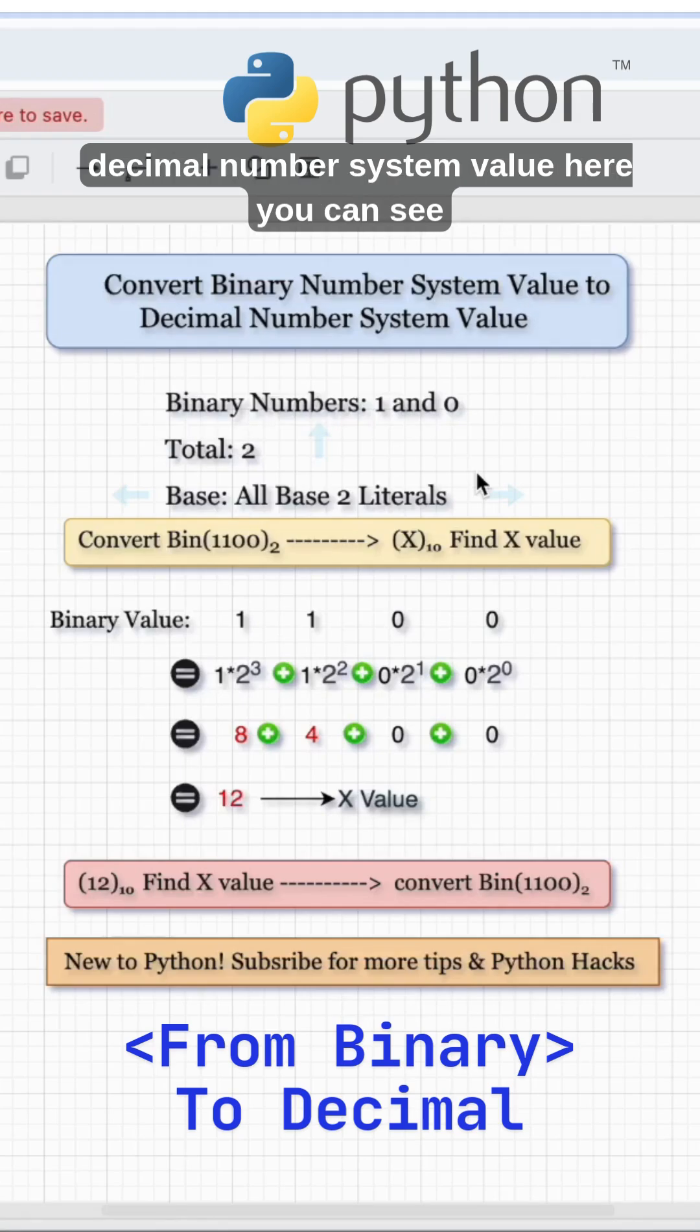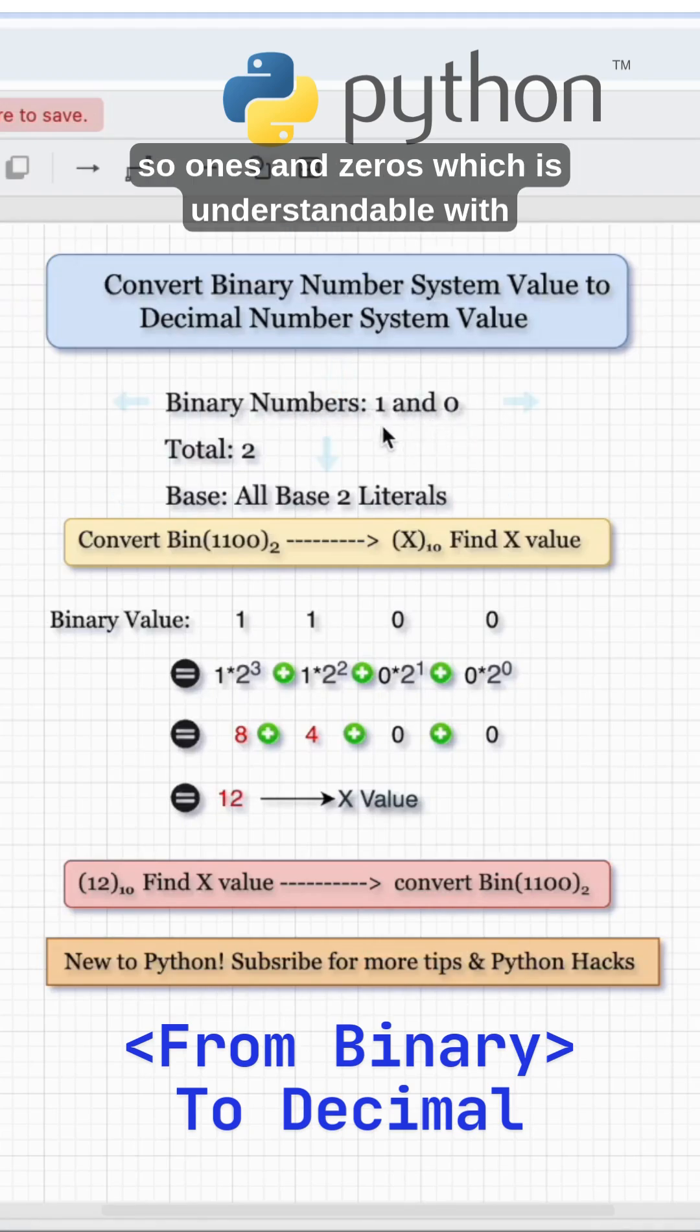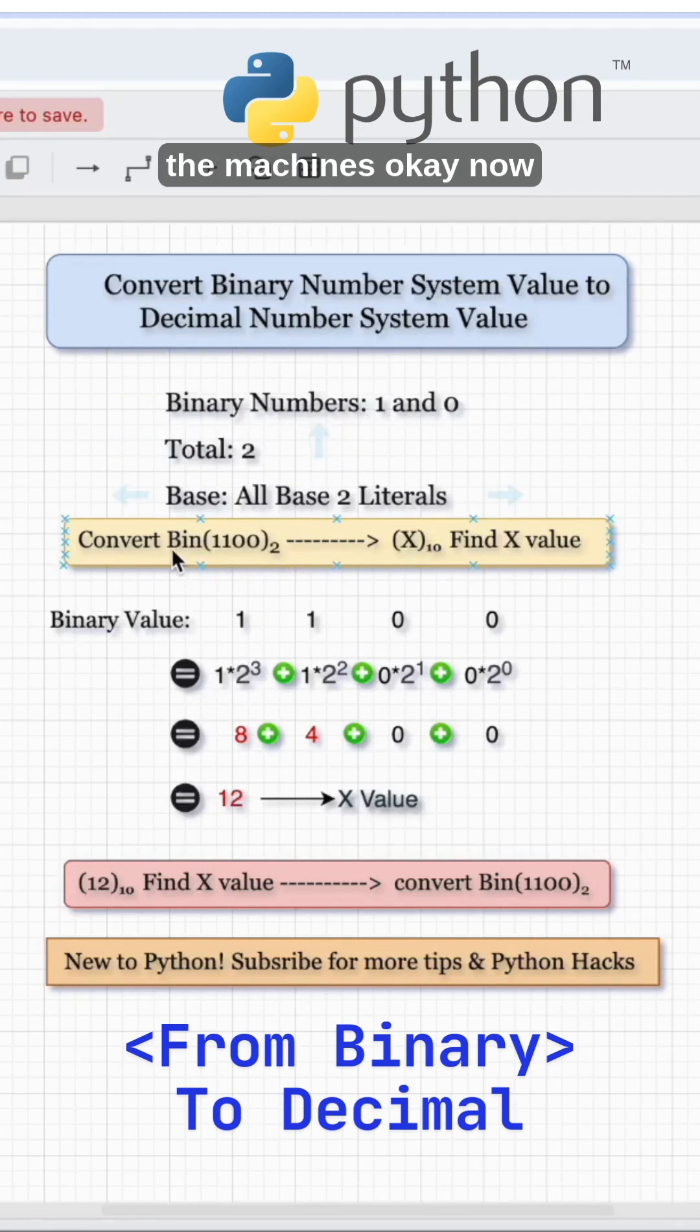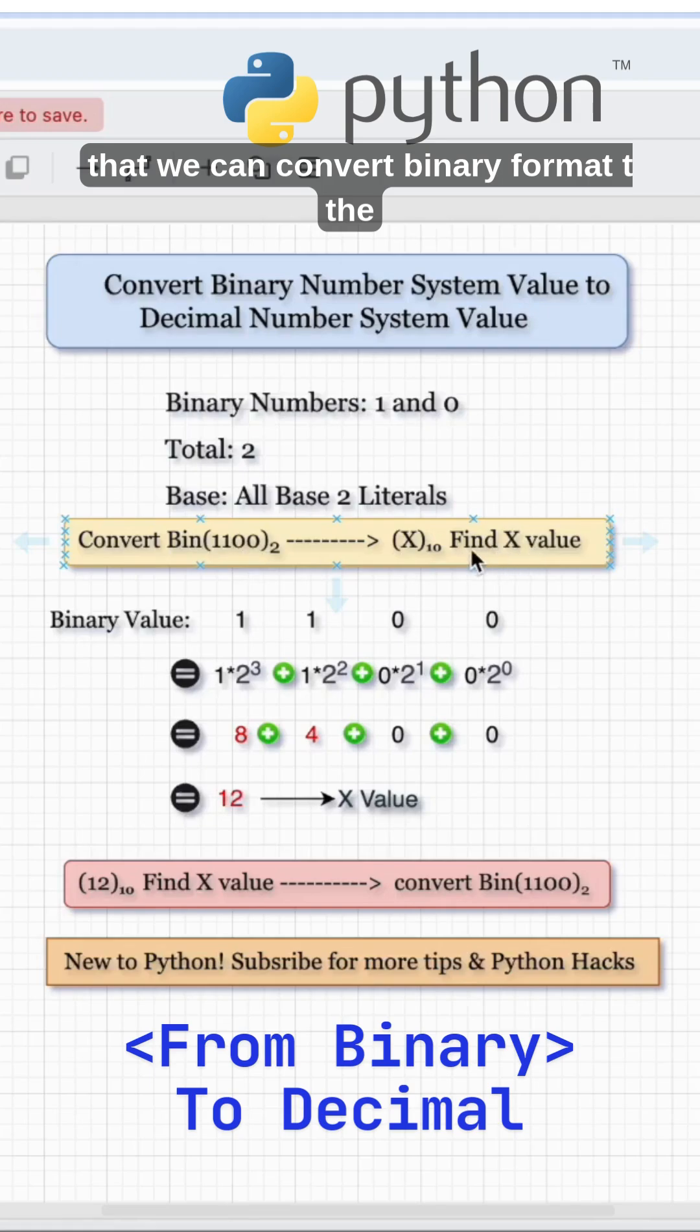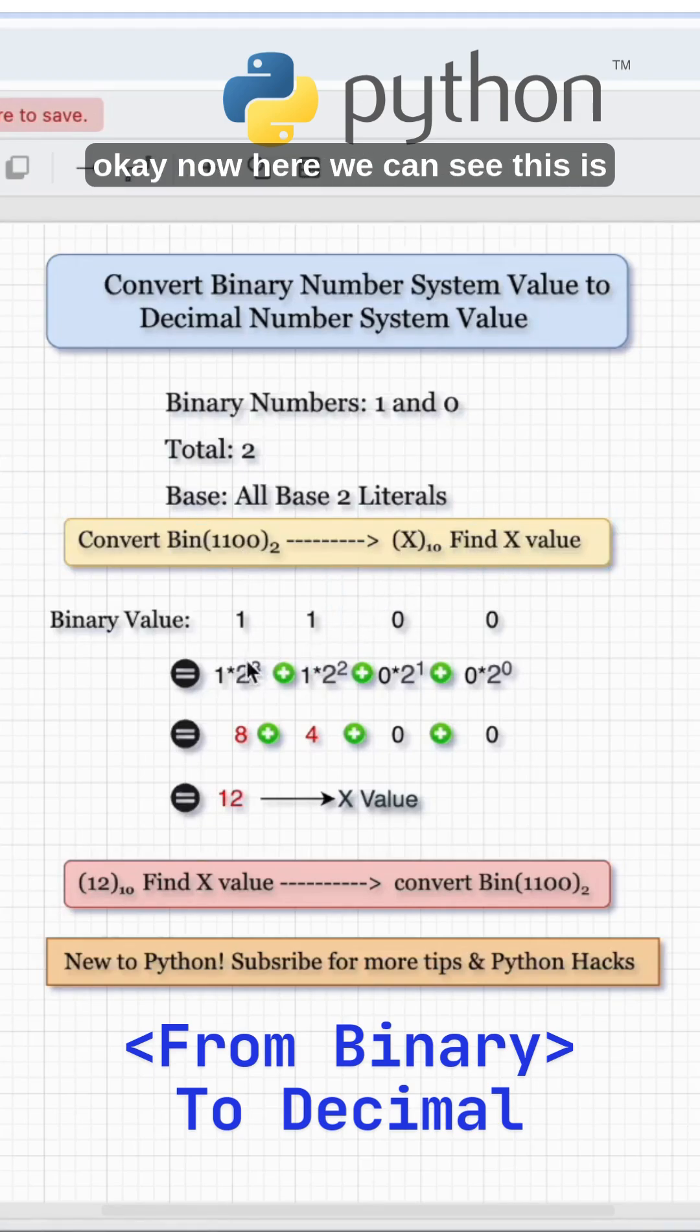Binary numbers are 1 and 0, ones and zeros which are understood by machines. We can convert binary format to the number system format which is understood by humans.